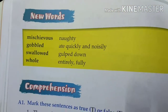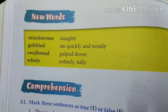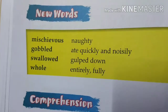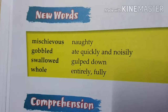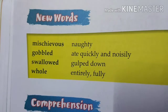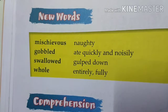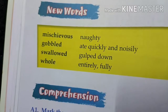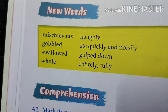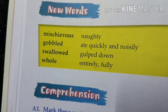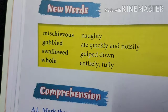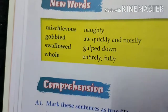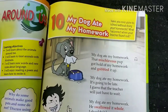Before I explain this poem, let me go over the new words. First word: 'mischievous' — mischievous means naughty, shaitan. Next word: 'gobble' — gobble means to eat quickly and noisily, jaldi jaldi aur awaaz karte huye khana. Next word: 'swallowed' — swallowed means to gulp down, kisi cheez ko nigal jaana. Next word: 'whole' — whole means entirely or fully, poora.